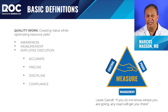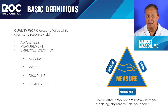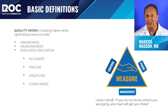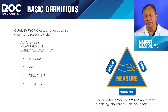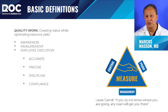Creating quality work means creating value and optimizing every resource in the organization. It requires awareness, measurement, and employee execution that is both accurate and precise, involves discipline and compliance. Measurement is the power foundation — it gives you control of your environment and proof of concept, because as Lord Kelvin says, if you can't measure it, you can't prove it. Management synchronization can only occur by measuring particular events or activities that we want to achieve, and measurement allows you to make changes if necessary.